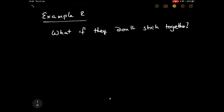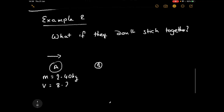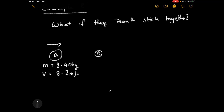Let's take object A and object B and give them masses and velocities. Object A has a mass of 2.40 kilograms and is moving in a positive direction at 8.2 metres per second — a rapidly moving object. Object B is stationary with a mass of 1.4 kilograms and a velocity of 0.